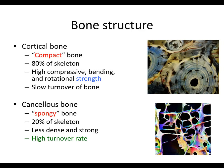A couple words about bone structure. Cortical bone is that compact bone — for instance, in the femoral diaphysis you have lots of dense cortical bone. It makes up about 80% of the skeleton, has high compressive, bending, and rotational strength, and has a relatively slow turnover of bone. Cancellous bone is more spongy — 20% of the skeleton, less dense and strong, but has a higher turnover rate. So a fracture would heal faster in cancellous bone than in cortical bone.